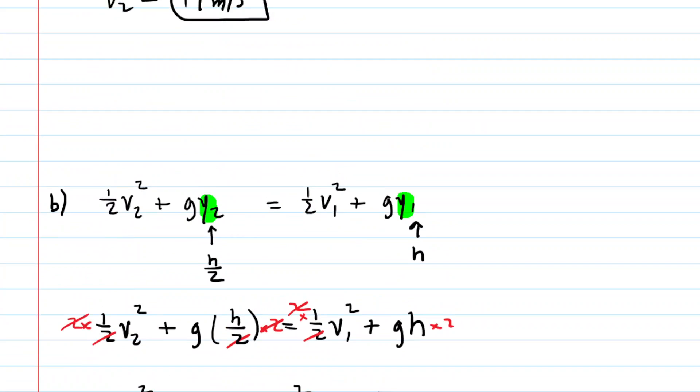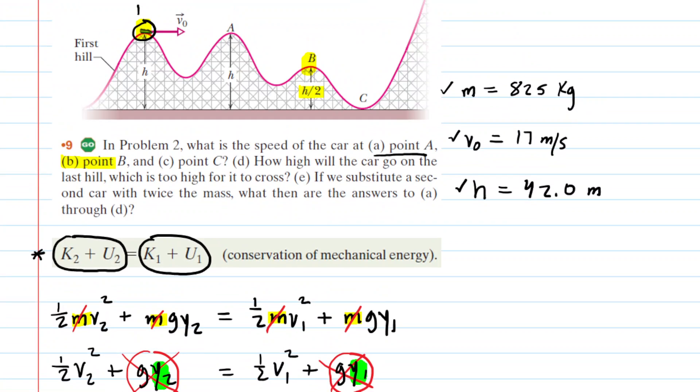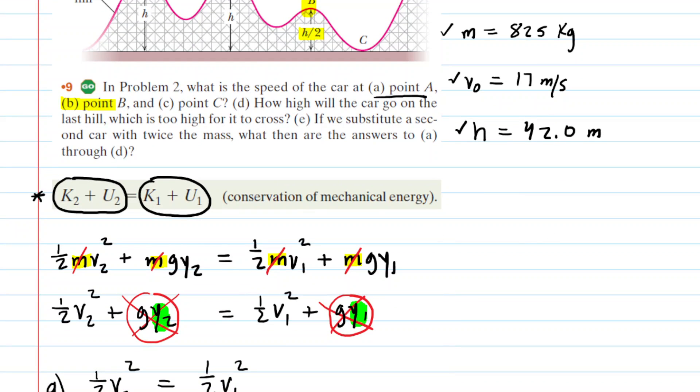That may have been the final part, but there might have been a little follow-up question at the end. In part E, it actually does say, if we substitute a second car with twice the mass, what then are the answers to A through D? Well, that is easy because you will remember that at the very beginning of this question, we noted that the mass appeared in all of the terms of the original conservation of energy equation. We had canceled out that mass, and then from that point forward, we never even plugged it in anywhere. So it is evident in part E that the answers to A through D would not change. So no change to any of our answers, even if we doubled the mass of the roller coaster car.